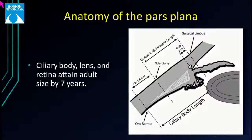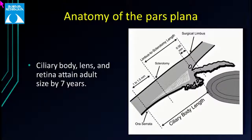The ciliary body, lens, and retina attain adult size by 7 years of age. In pediatric eyes, we should know the anatomy of the pars plana relative to the limbus. The scleral spur marks the anterior border of the ciliary body, estimated at 0.35 millimetres from the posterior margin of the surgical limbus. A safe distance of 1 to 1.5 millimetres from the ora serrata is recommended when making a safe sclerotomy through the pars plana.